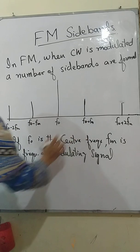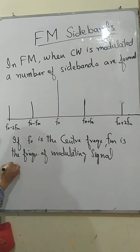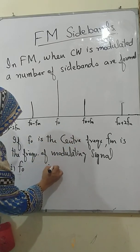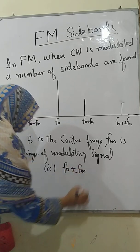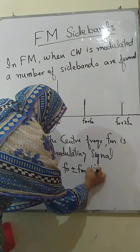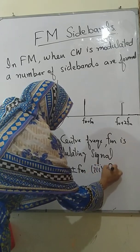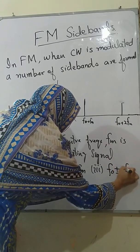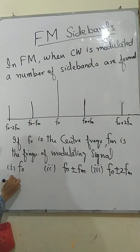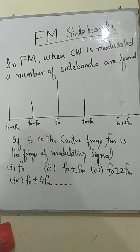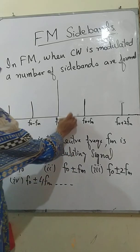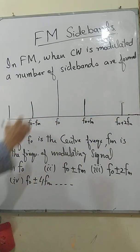In the above spectrum we can identify: number 1 — F0, the frequency of the carrier wave; the second band at F0 ± Fm; the third band at F0 ± 2Fm; the fourth at F0 ± 3Fm; and so on. We can have an infinite number of bands, whereas the strength of the bands decreases after each successive band.